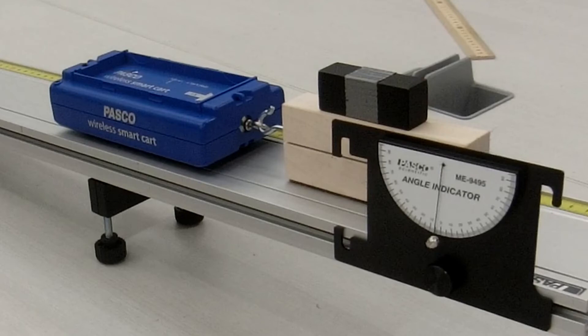The sensors in the cart measure the tension force of the friction block pulling on the cart, as well as the acceleration of the cart as it moves down the track.